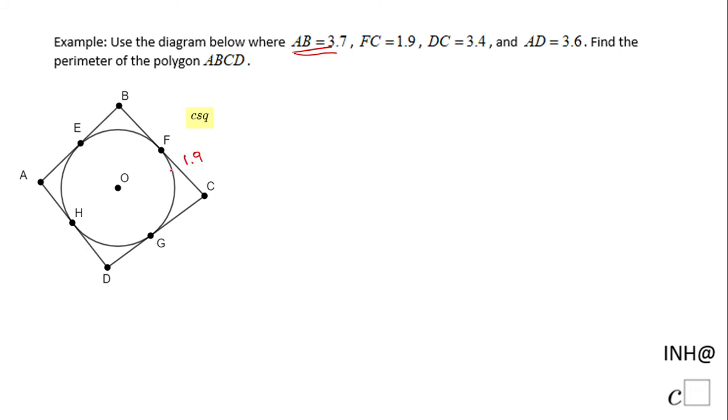DC, the whole segment, is 3.4 and AD, the whole segment, is 3.6. We need to find the perimeter of the polygon ABCD. The perimeter of this polygon is going to be the sum of its sides, so it's going to be AB plus BC plus DC plus AD.